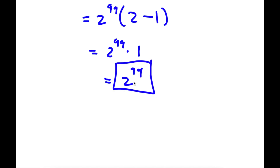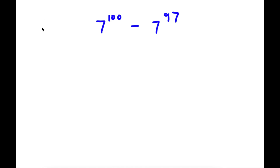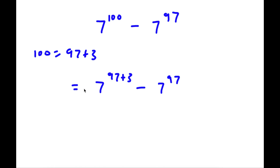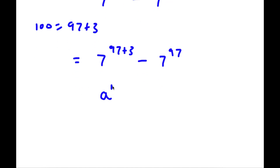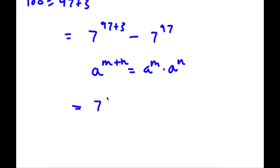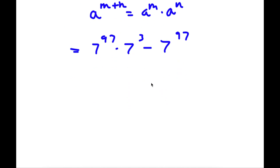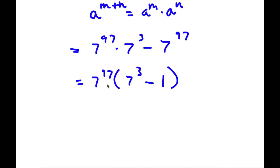So now I have 7 to the power of 100 minus 7 to the power of 97. Now 100 is equal to 97 plus 3, so now I have 7 to the power of 97 plus 3 minus 7 to the power of 97. Using the rule a to the power of m plus n equals a to the power of m times a to the power of n, I get 7 to the power of 97 times 7 to the power of 3, minus 7 to the power of 97. Factoring out 7 to the power of 97, I get 7 to the power of 97 times 7 to the power of 3 minus 1.